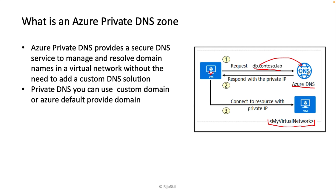The DNS checks the record in the DNS zone. Since this virtual machine is already registered in the private DNS, it returns the private IP address to the VM. After receiving the response, the VM knows where the target virtual machine is located and connects to it. This is how 'db.console.lab.com' is resolved through the Azure Private DNS zone.